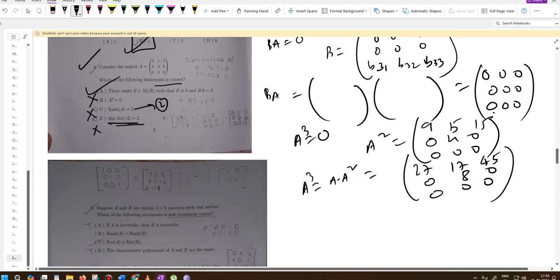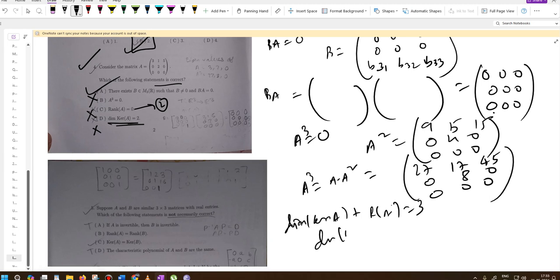Because dimension of kernel of A plus rank of A equals 3. So dimension of kernel of A should be 3 minus 2, which equals 1. Here they're saying it's 2, so this statement is also incorrect.